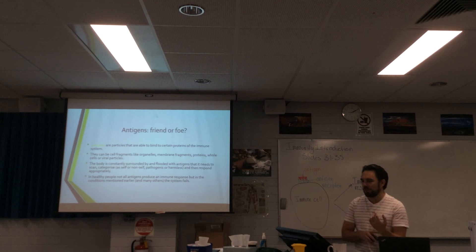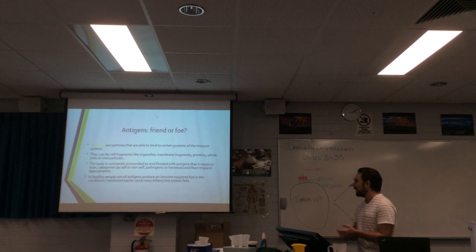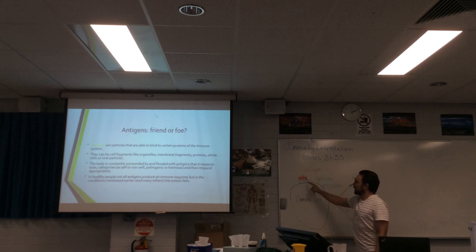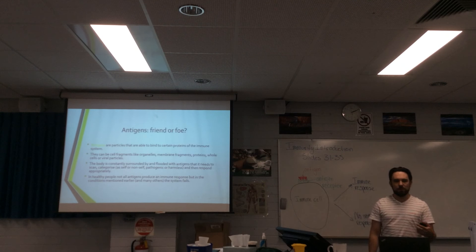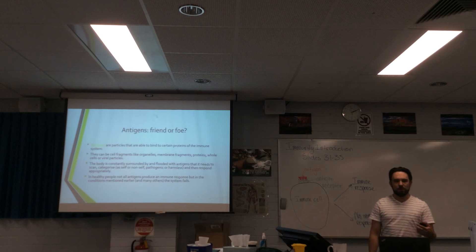In healthy people, not all antigens produce an immune response — in fact, the majority don't. But in the conditions mentioned earlier, the system fails. Here on the board we have an example: an antigen in red binds to an antigen receptor. That looks very familiar — it looks a lot like the molecular recognition system that pathogens use to get into our cells. We're using the same system. This complementary binding is used by both the pathogens and our body. Sure, pathogens might use proteins on our cells to attack us, but we'll do the same thing — we'll use the proteins that pathogens produce, or bits of their body, or even entire cells, to identify and respond to them.